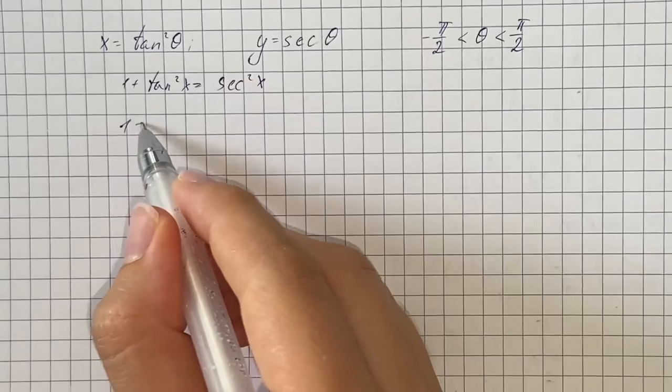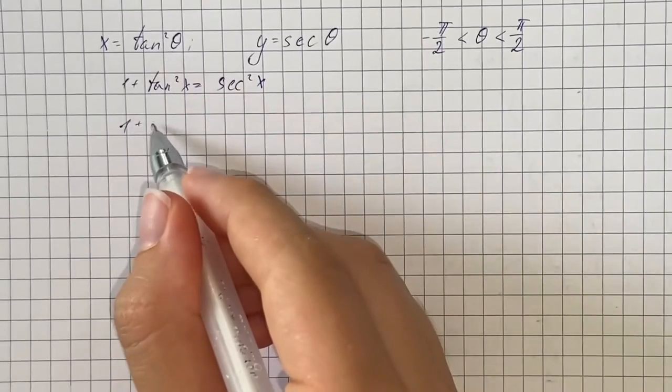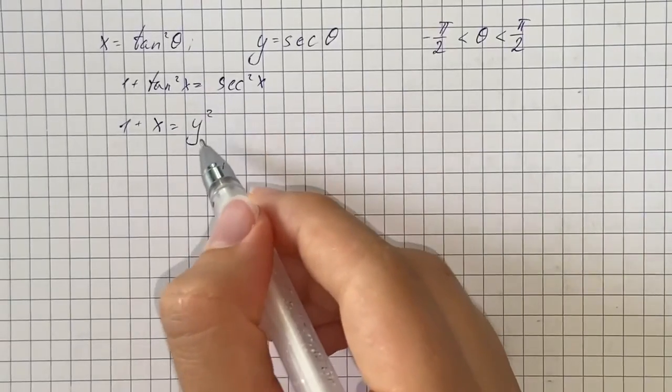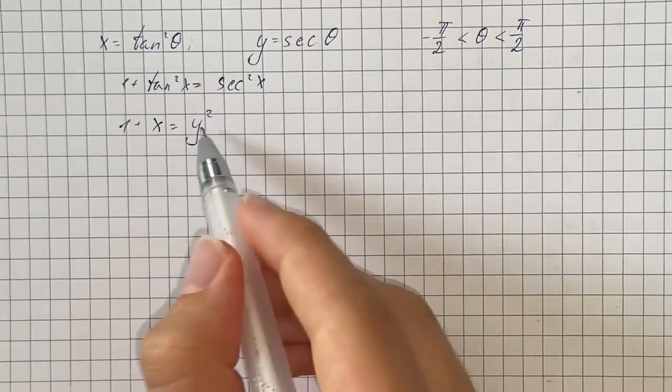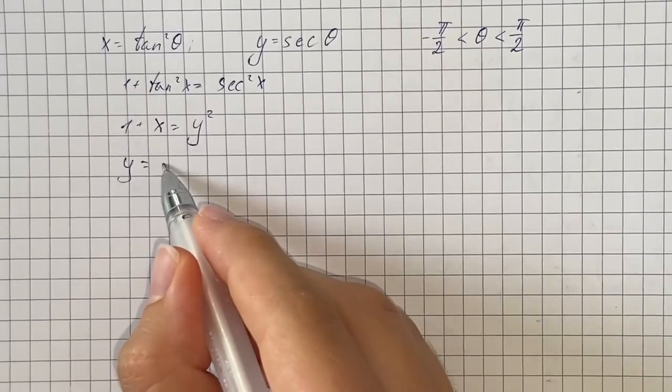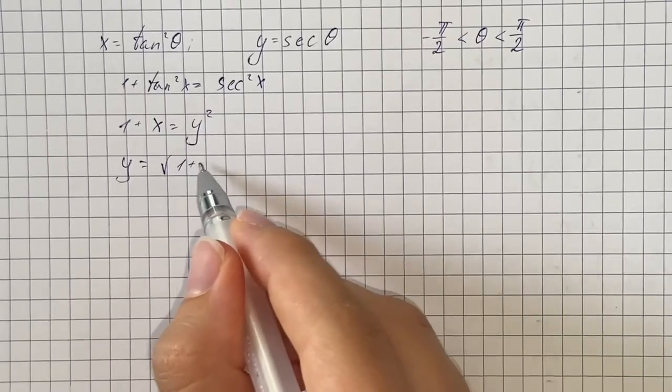So we're going to replace tangent squared of x with x and secant squared of x with y squared, and we're going to solve this for y. We get that y equals square root of 1 plus x.